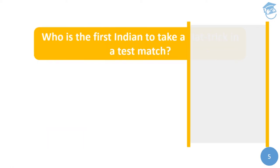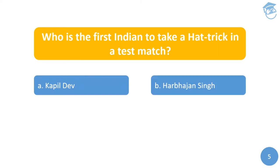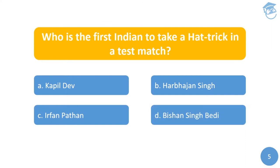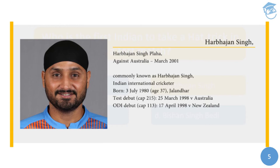Moving to the next question: Who is the first Indian to take a hat-trick in a test match? Options are: A) Kapil Dev, B) Harbhajan Singh, C) Irfan Pathan, or D) Bishan Singh Bedi. The answer is Harbhajan Singh, who took the first hat-trick in a test match for India against Australia in 2001.